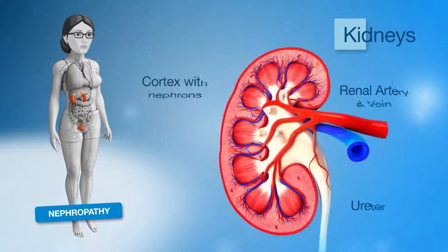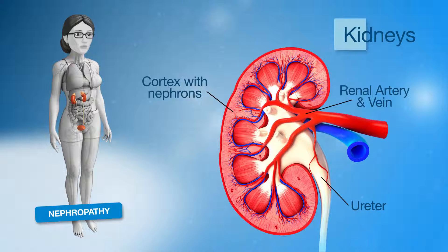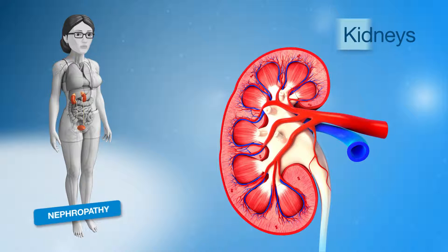Your two kidneys act like a filtering system, keeping the important nutrients in and getting rid of the toxins from your blood. Damage to the small blood vessels within the kidneys can affect this important filtering system.